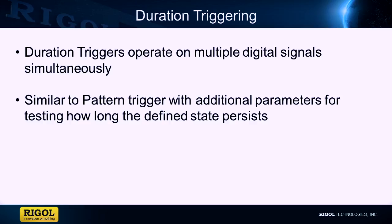Here we are looking at digital signals, so we've set a state for each channel of interest to either high or low. Channels can also be set to don't care, so the scope will trigger regardless of that signal's state. This is just like a pattern trigger.